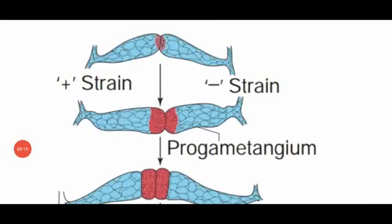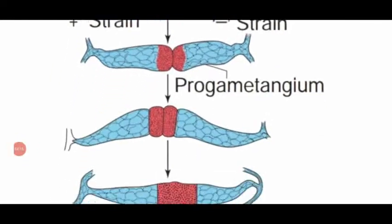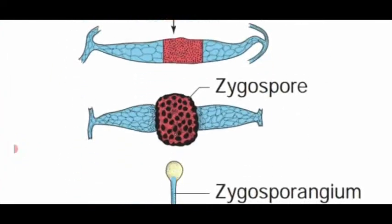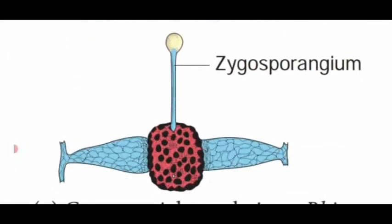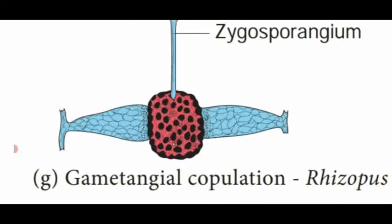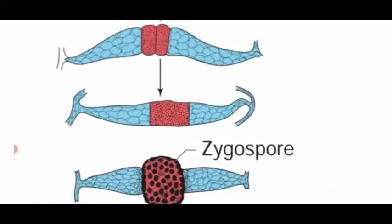This diagram shows the sexual reproduction in Rhizopus fungi by the method of gametangial copulation.